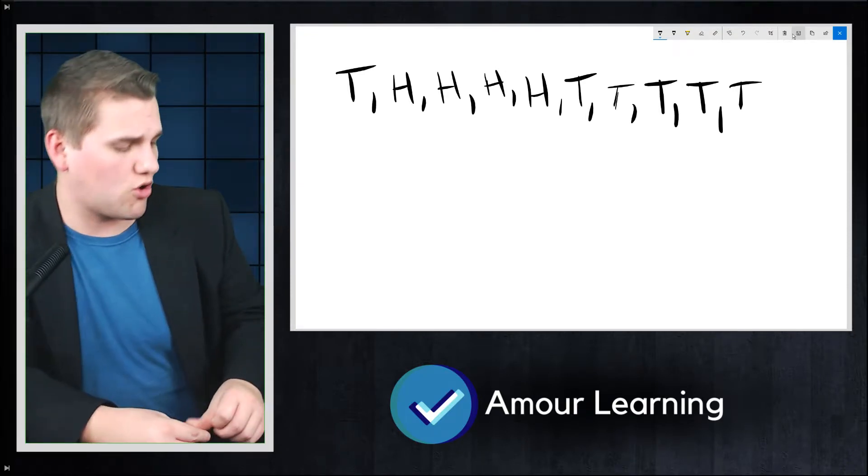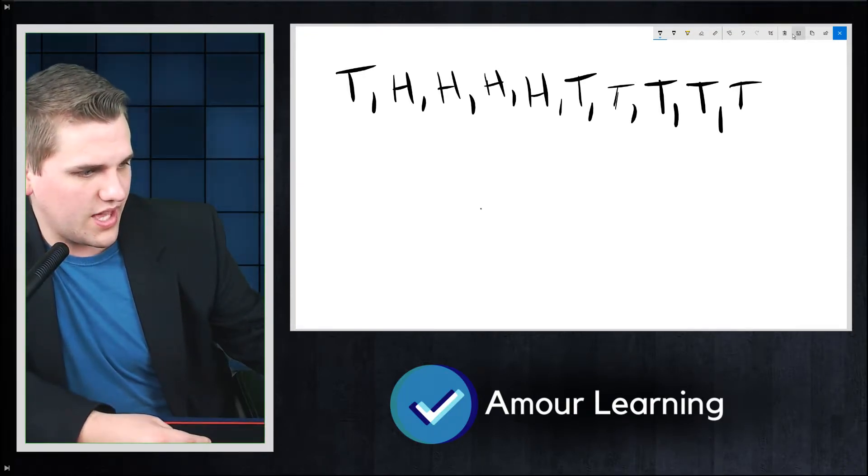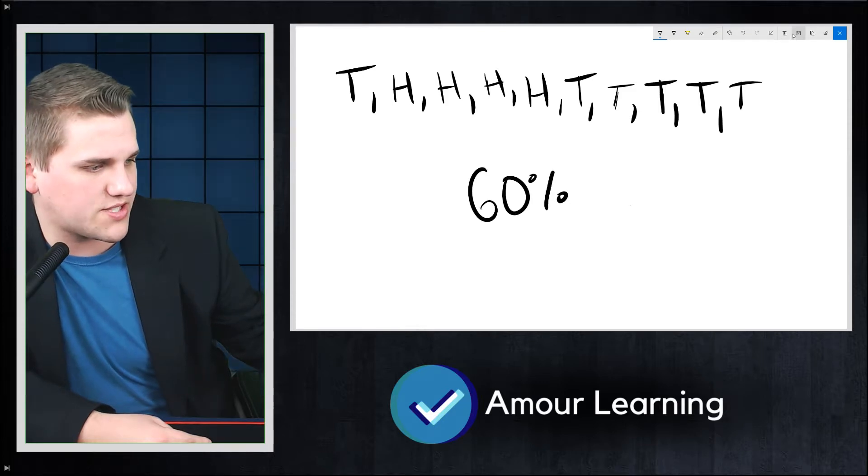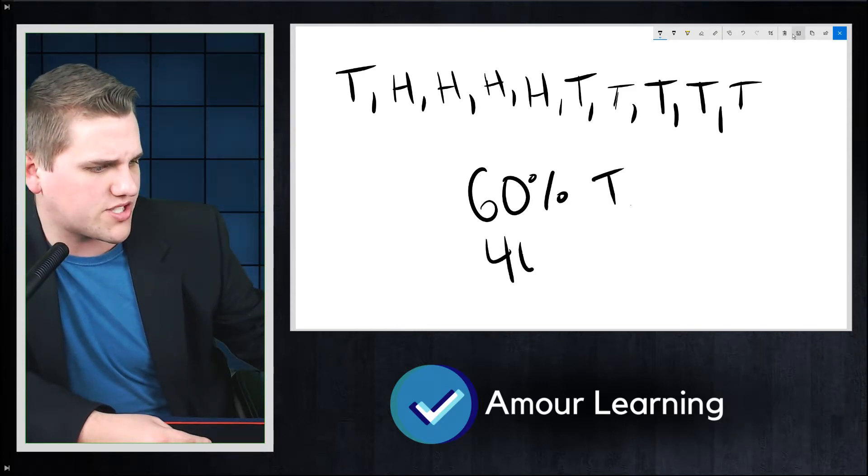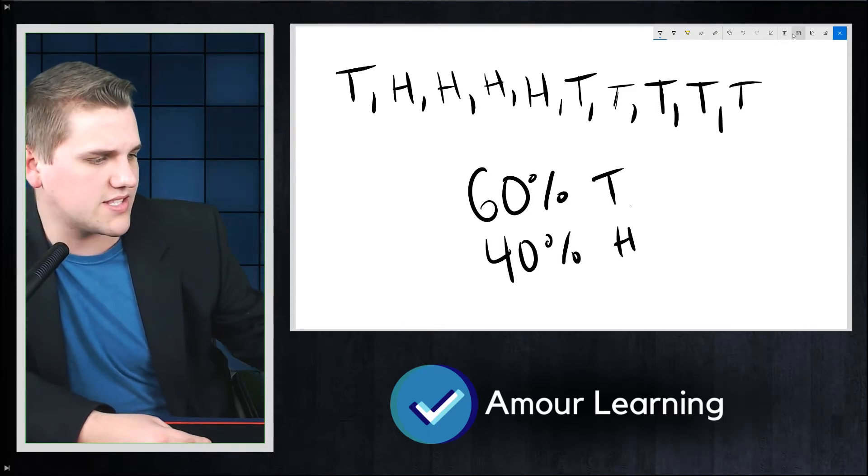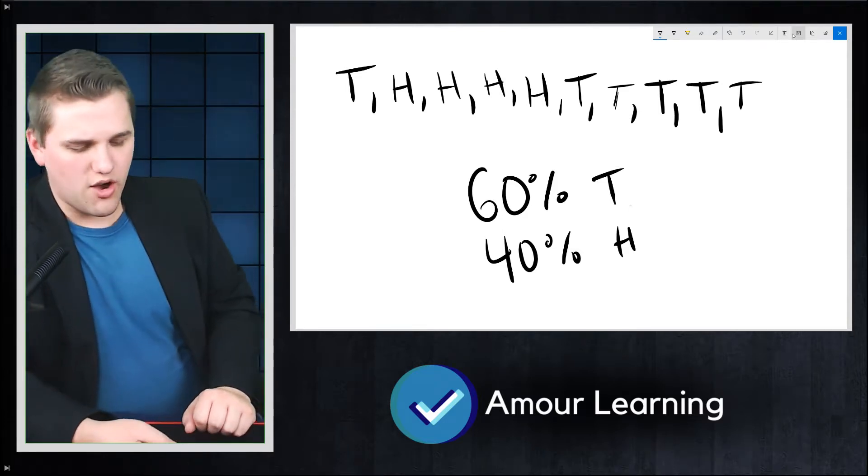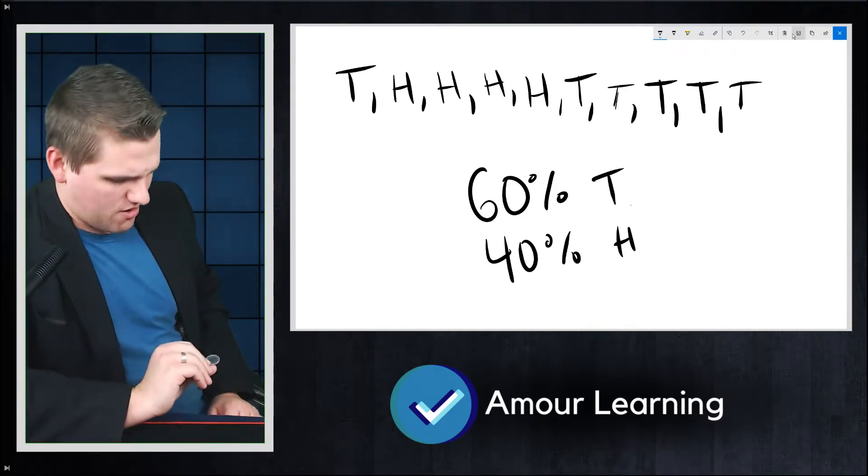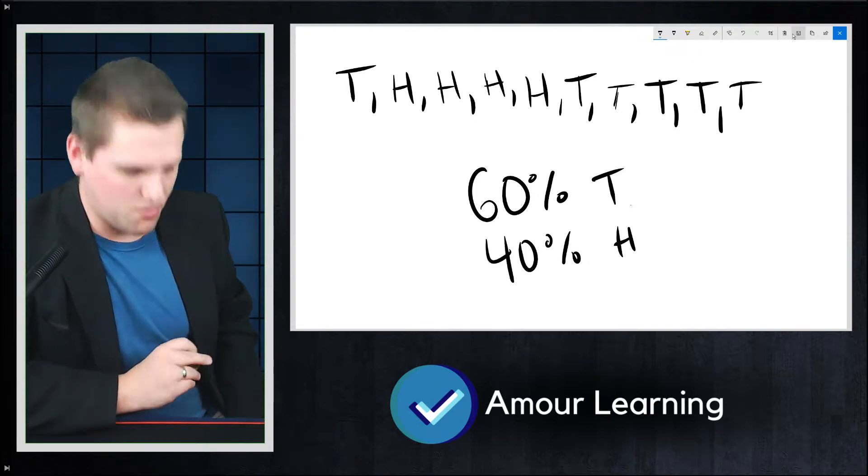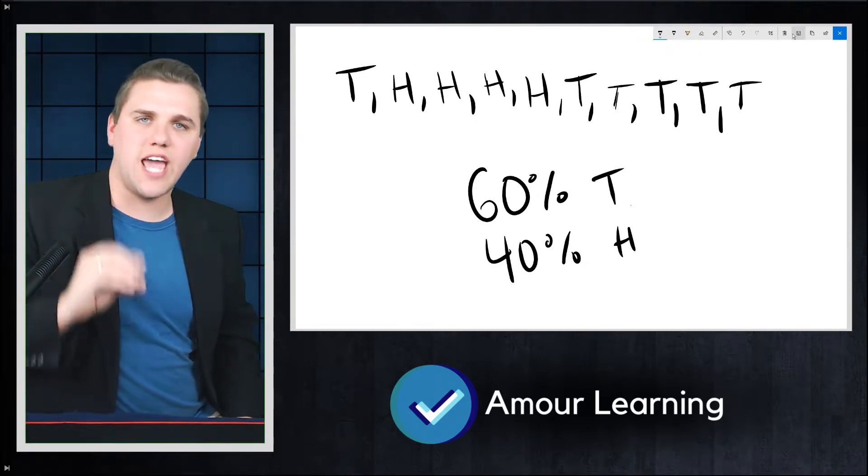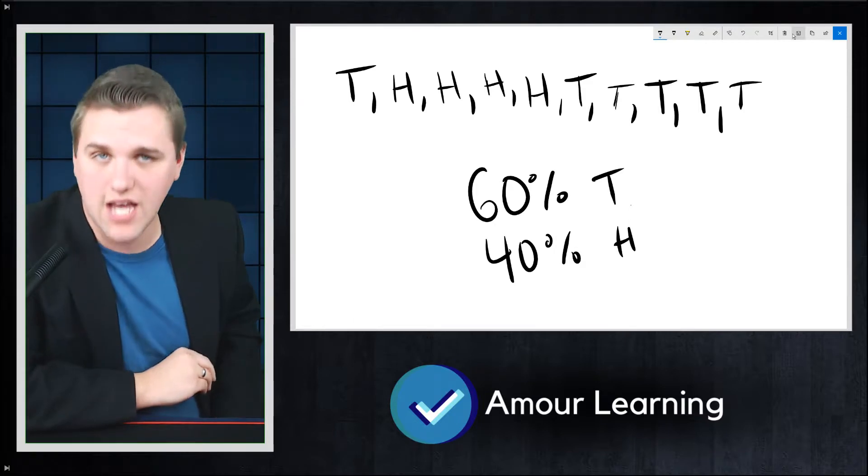Now, if you notice here real quick, the number of tails is 60%. 60% tails. And only 40% heads. So, my next claim now, if I were to be a true scientist, would be that this coin lands on tails 60% of the time.